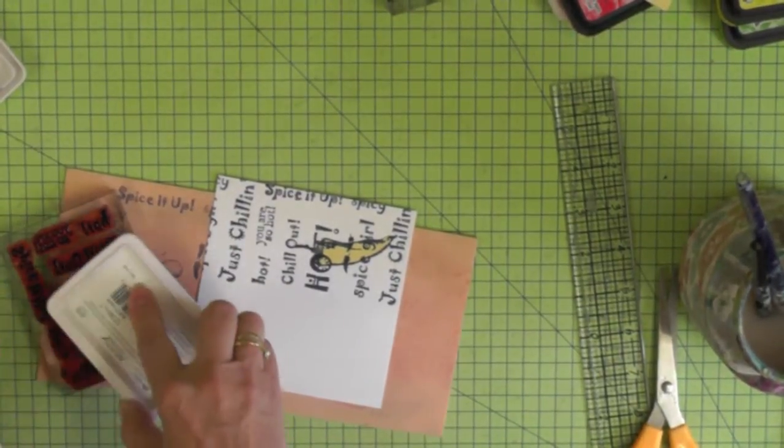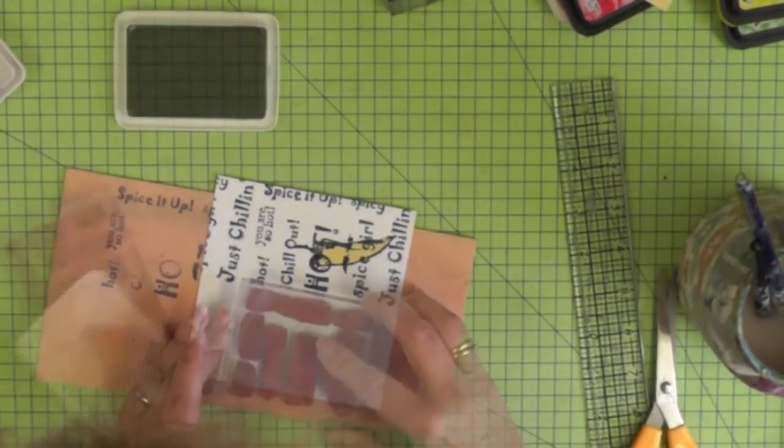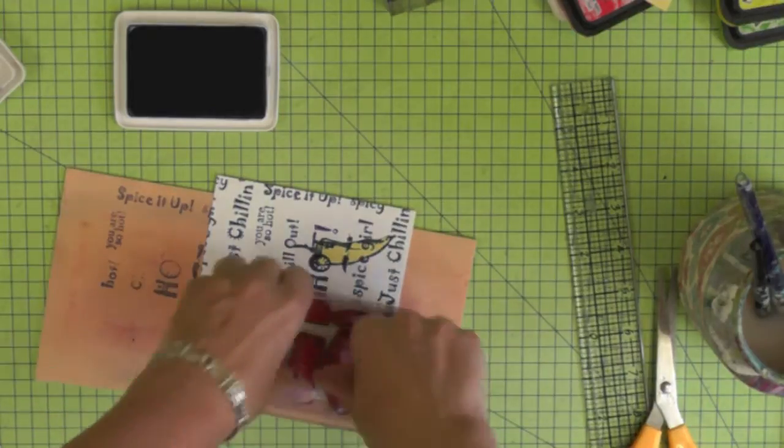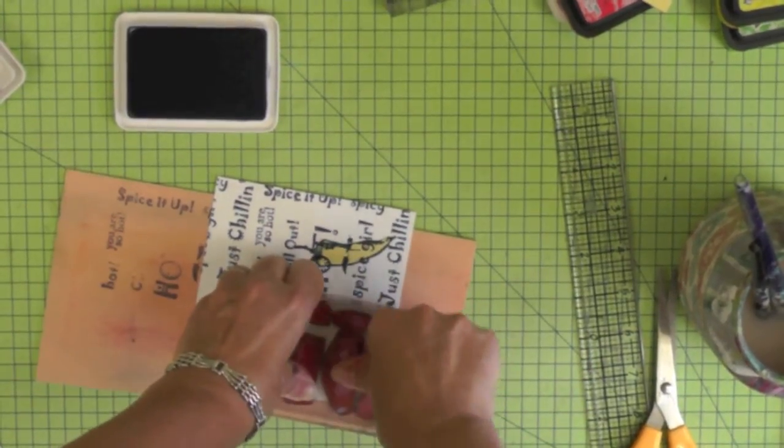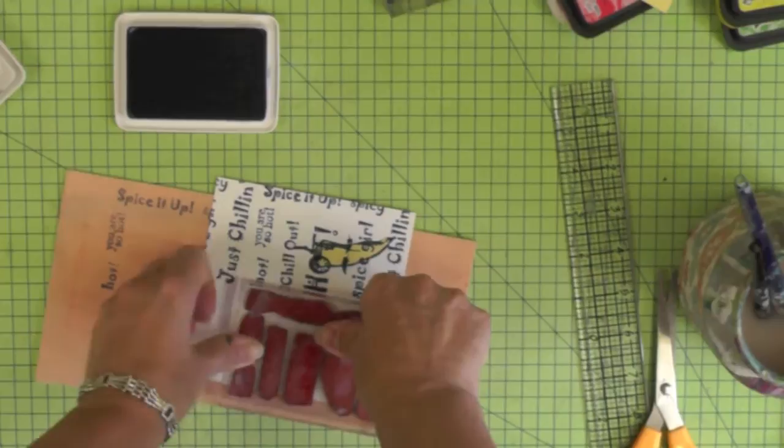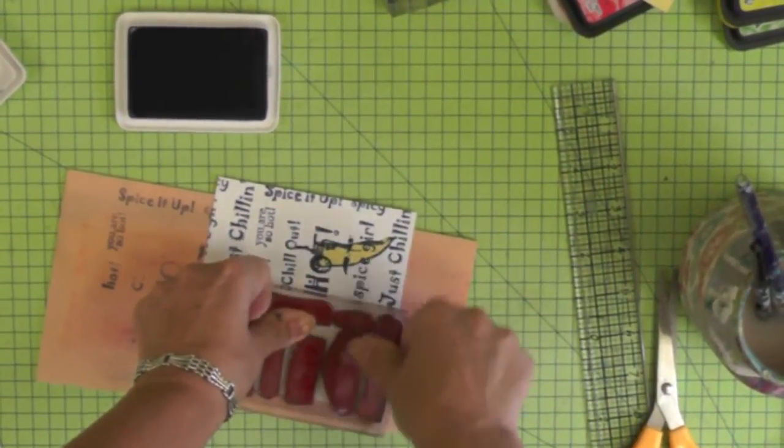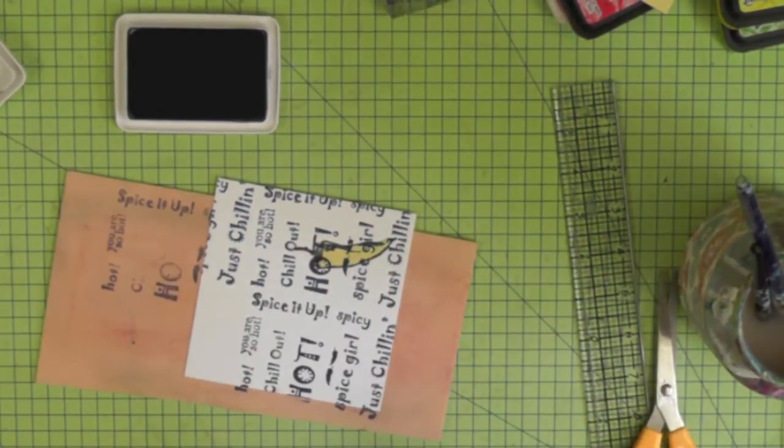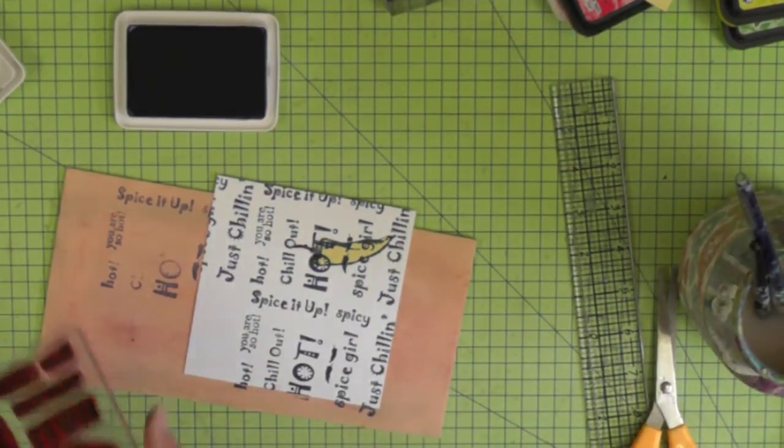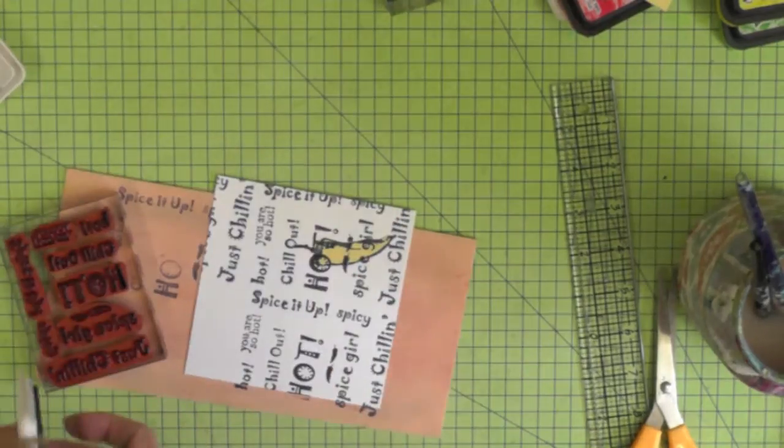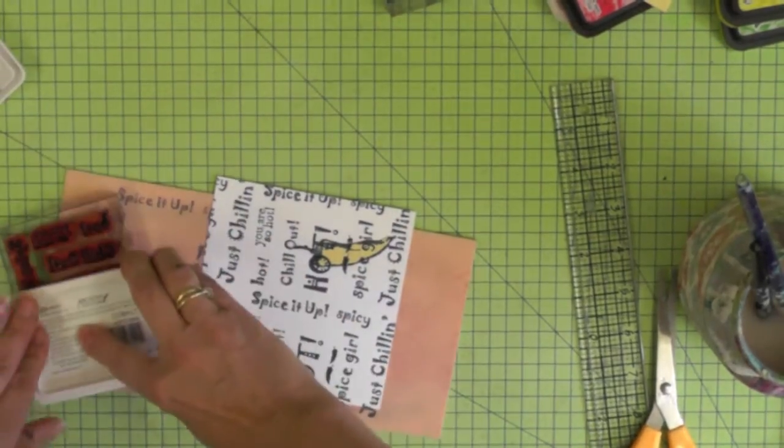Make sure that your stamp is inked up really well. Make sure that you've caught every single one of the stamps, that your fingers don't have any ink on them and that when you position the stamp you press down really well all over the stamp applying pressure to each one of those little word strips to ensure that you get a lovely crisp image. Now I've got one more little stamp to do in the top left hand corner.